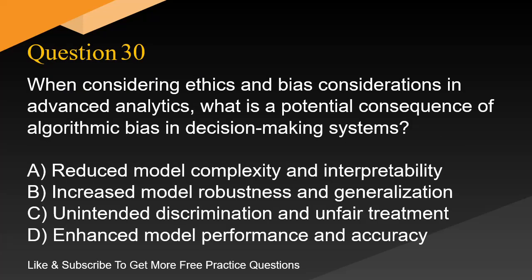Question 30. When considering ethics and bias considerations in advanced analytics, what is a potential consequence of algorithmic bias in decision-making systems? A. Reduced model complexity and interpretability. B. Increased model robustness and generalization. C. Unintended discrimination and unfair treatment. D. Enhanced model performance and accuracy.